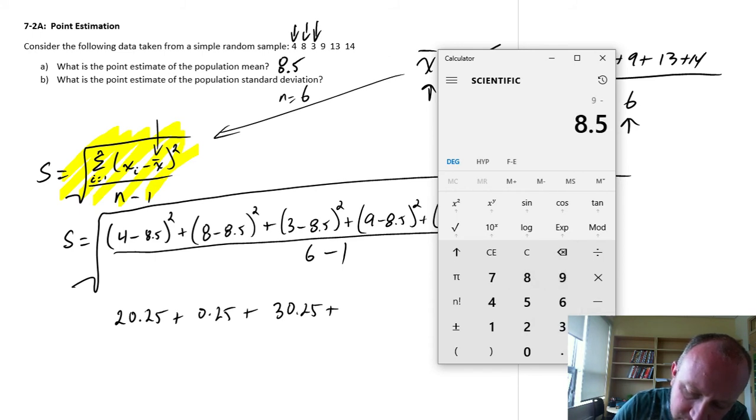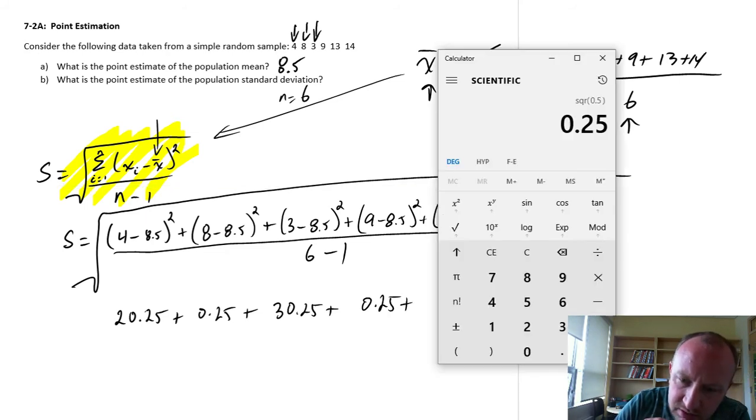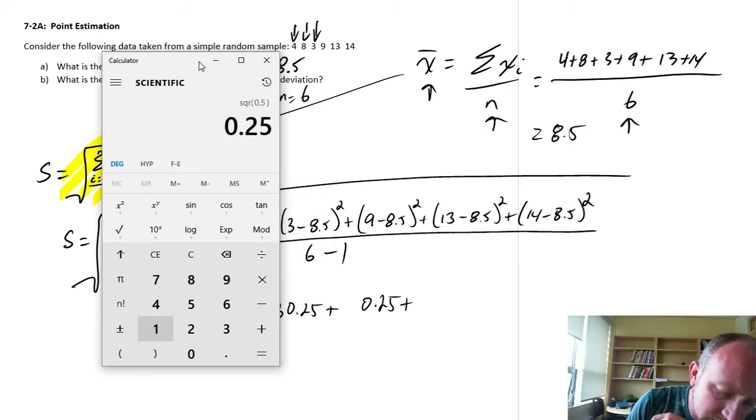9 minus 8.5 squared. Just two more to go. 13 minus 8.5. So 20 and a quarter.